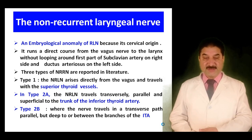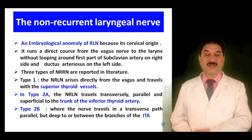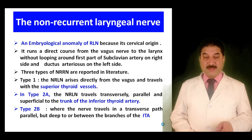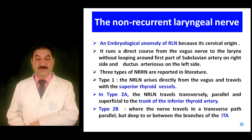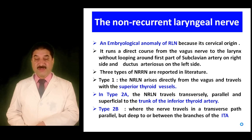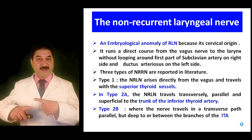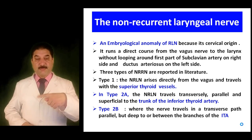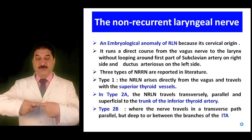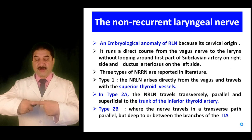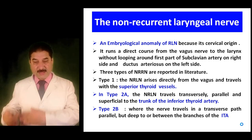Three types of non-recurrent laryngeal nerves are reported in the literature. In Type 1, the non-recurrent laryngeal nerve arises directly from the vagus and travels with the superior thyroid vessels. In Type 2A, the non-recurrent laryngeal nerve travels transversally, parallel and superficial to the trunk of the inferior thyroid artery. In Type 2B, the nerve travels in a transverse path but deep to or between the branches of the inferior thyroid artery.